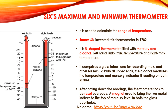The next instrument is Six's maximum and minimum thermometer. Temperature is a varied element of weather and climate — in simple words, it keeps on changing and never remains the same. Because of this variability, it can vary over an hour, day, month, or year. Due to its variable nature, it becomes essential to calculate the maximum and minimum ranges of temperature at a place. Thus, Six's maximum and minimum thermometer is used to calculate the range of temperature.